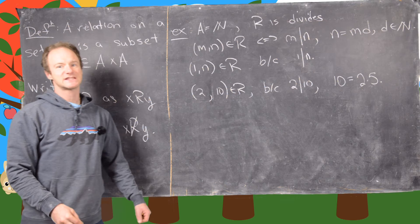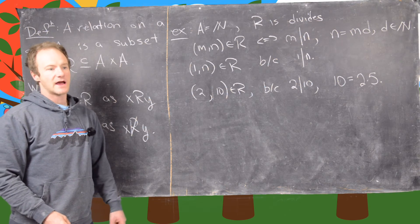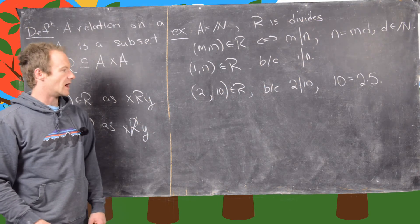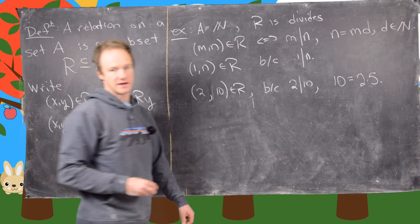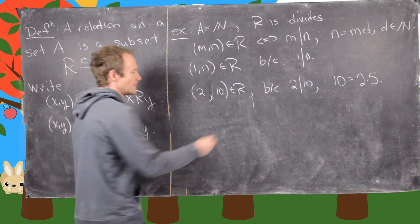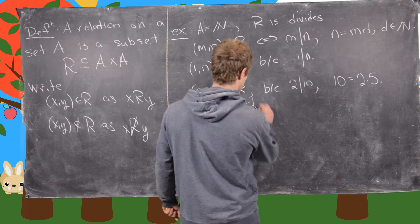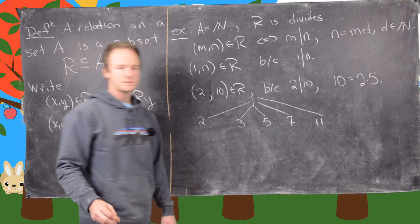So we can make a nice picture of what's going on in this relation by making a tree diagram with division going from top to bottom. So 1 divides everything. So we can put 1 at the top, and then 1 level down from that are all the prime numbers.